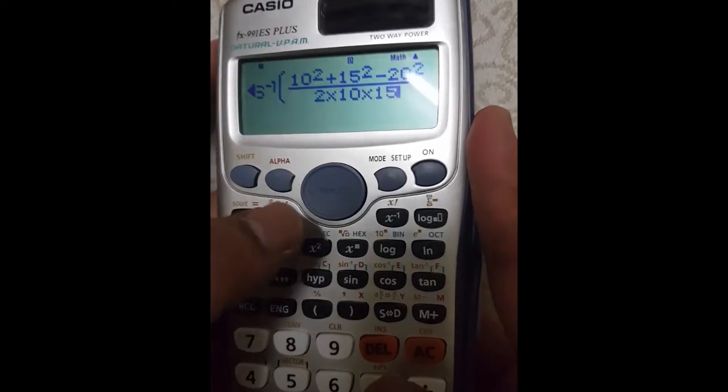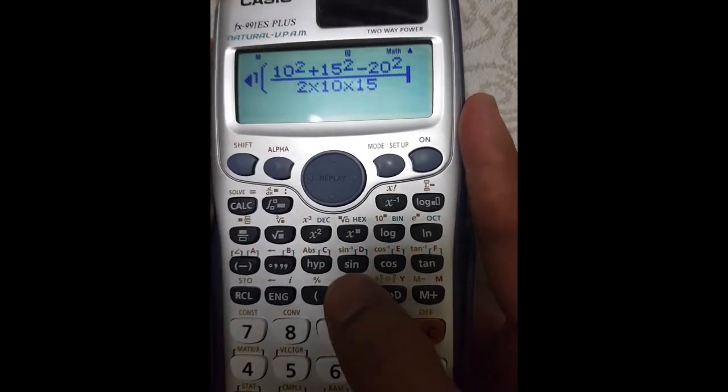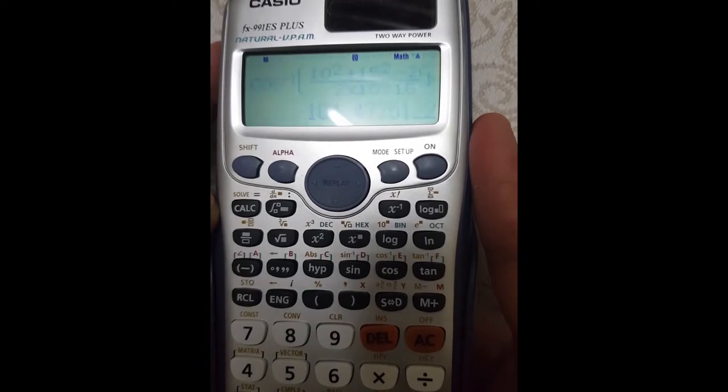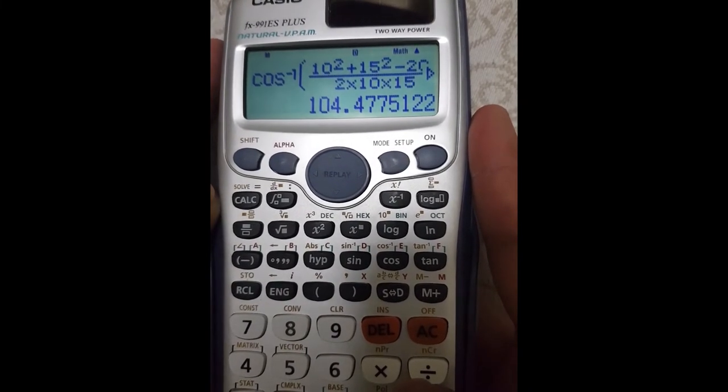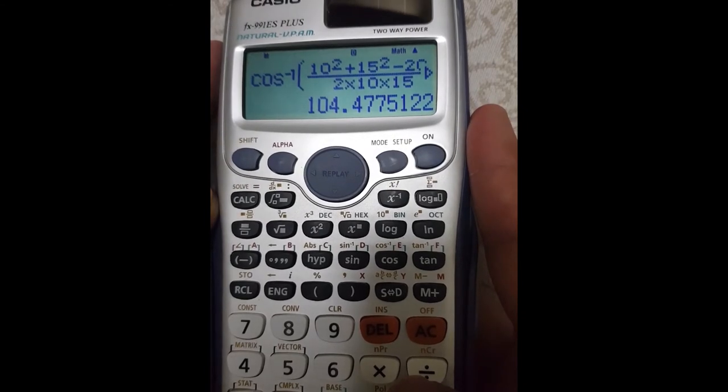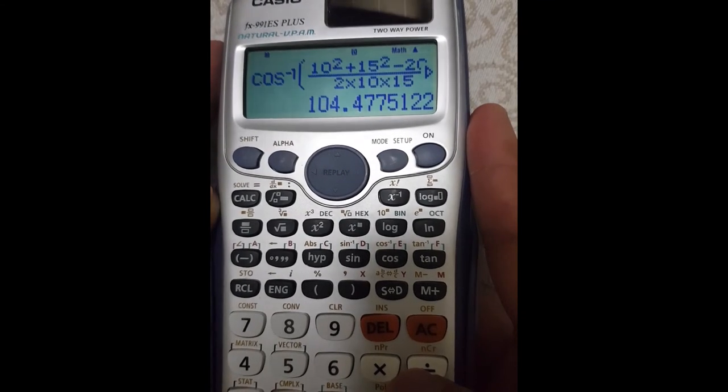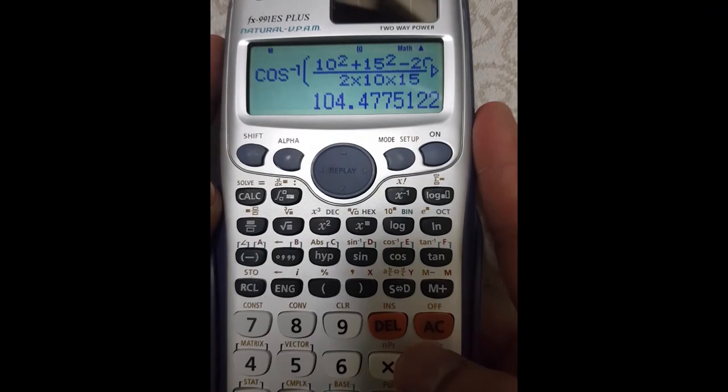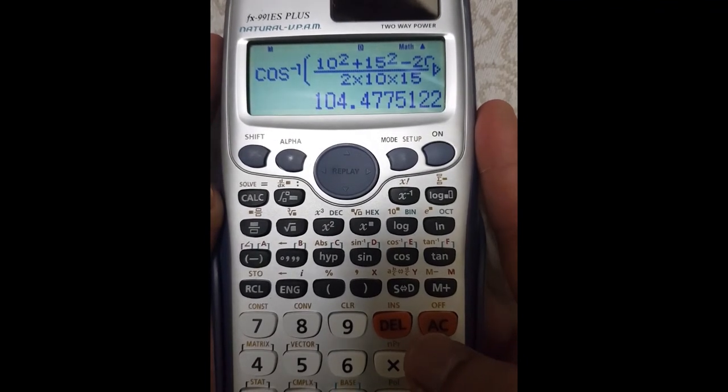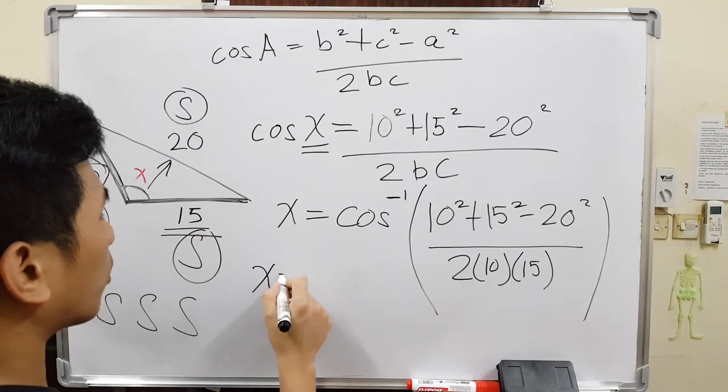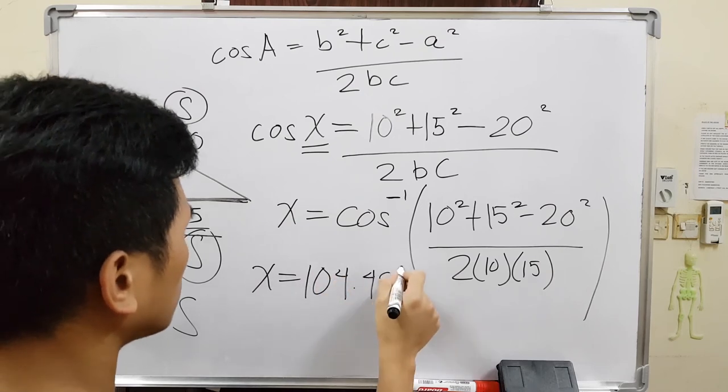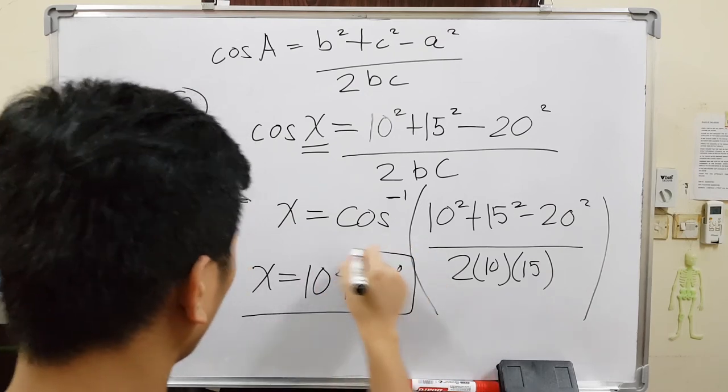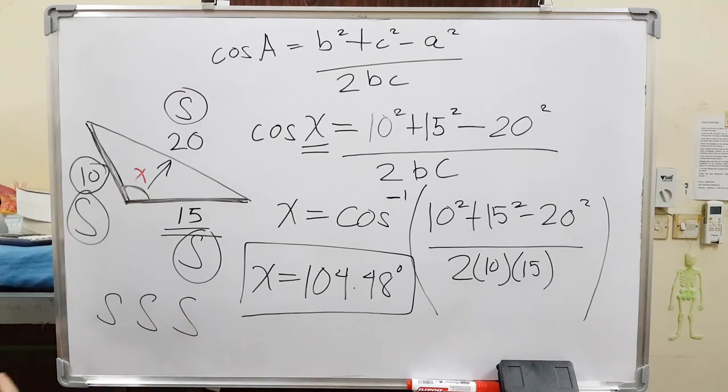All over 2 times the 10 times the 15. Basically these two. And you can close the parenthesis here. And you will get an answer which is approximately 140 degrees. Or you can go up to two decimal places or three significant figures. It depends on what the question is asking for. So our x is approximately 104.48 degrees given into two decimal places.